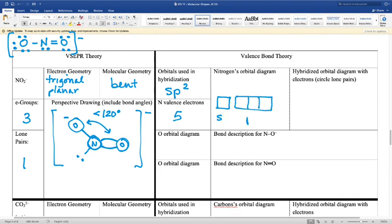There's S, and there's P. And five valence electrons. One, two, three, four, five.